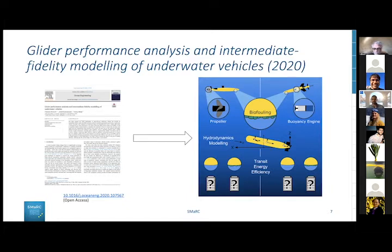This graphical abstract summarizes what we attempted to do. We're looking at two different propulsion systems: the propeller, which is the most common and conservative means of propulsion, and the buoyancy engine, which is the heart of underwater gliders. We looked at how these two propulsion systems compare, including cases of biofouling.